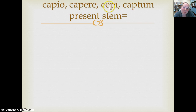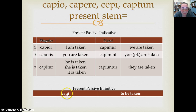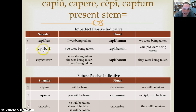Our paradigm verb is capio, capere, cepi, captum. First principal part plus R gives capior — I am taken; caperis; capitor; capimur; capimini; capiuntur. Like the third, third IO removes the entire ERE from the second principal part and replaces it with an I, so capi means to be taken. Do not confuse capi, the present passive infinitive, with capio, the first person singular present active indicative. Imperfect passive: capiebar, capiebaris, capiebatur, capiebamur, capiebamini, capiebantur. Future passive: capiar, capieris, capietur, capiamur, capiemini, capientur.